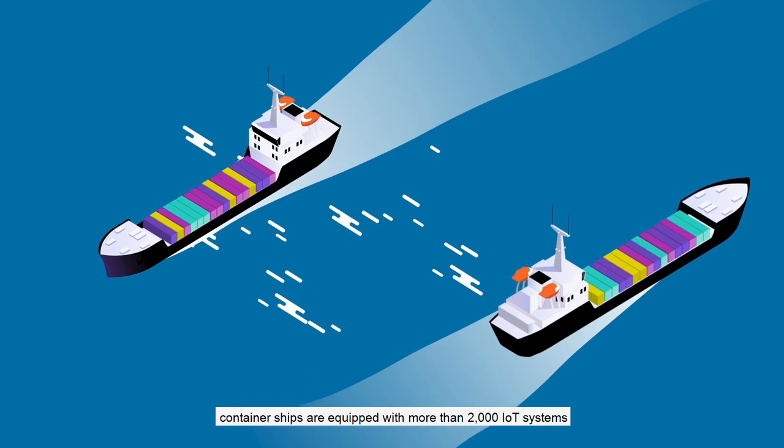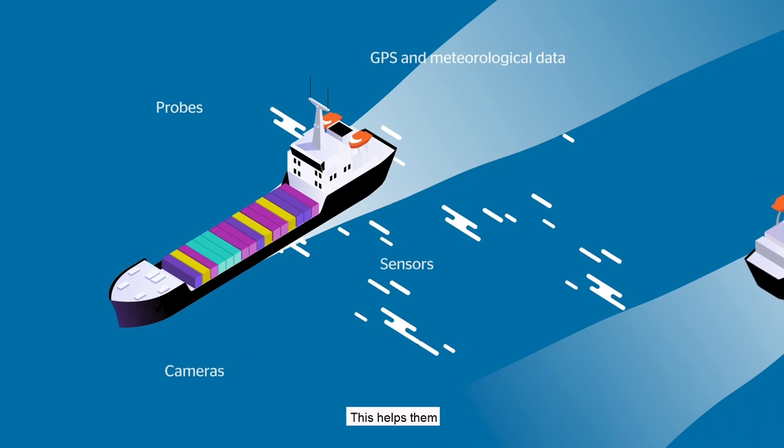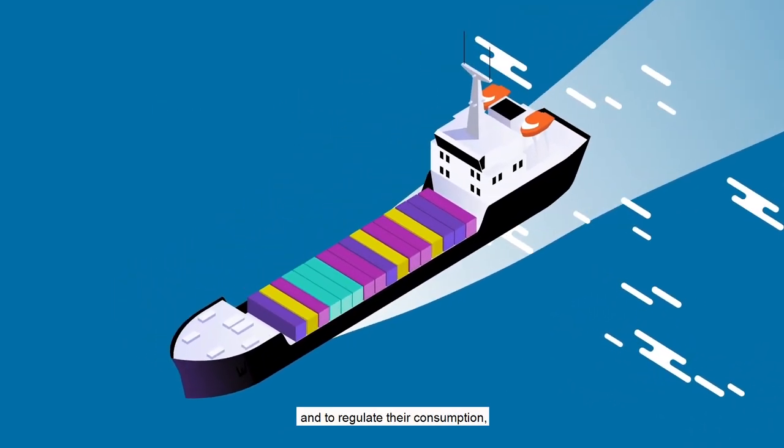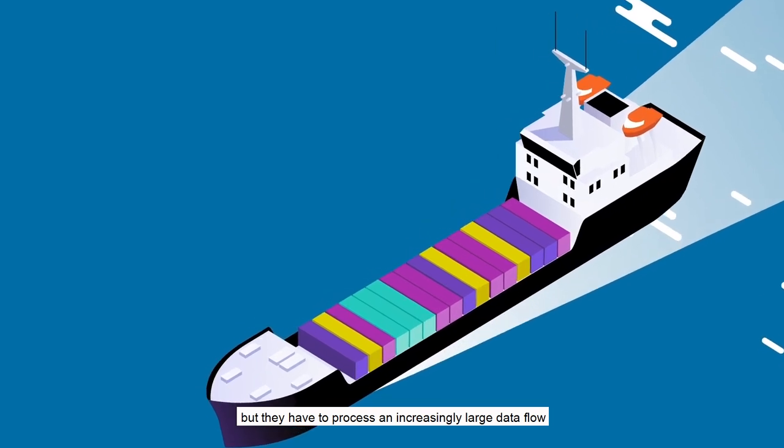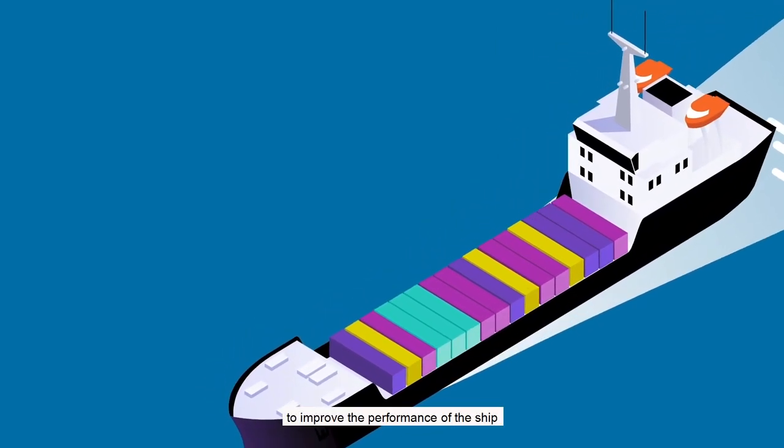container ships are equipped with more than 2,000 IoT systems. This helps them optimize itinerary and regulate their consumption, but every day they have to deal with an ever-increasing data flow to improve the performance of the ship.